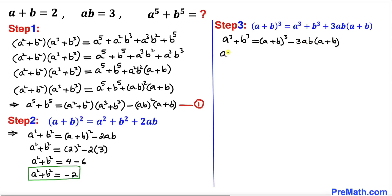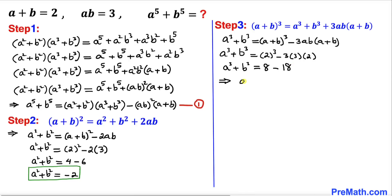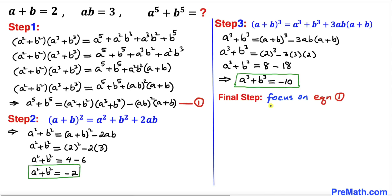So a power 3 plus b power 3 equals 2 cubed minus 3 times 3 times 2. Simplifying: that is 8 minus 18, so a power 3 plus b power 3 equals negative 10.